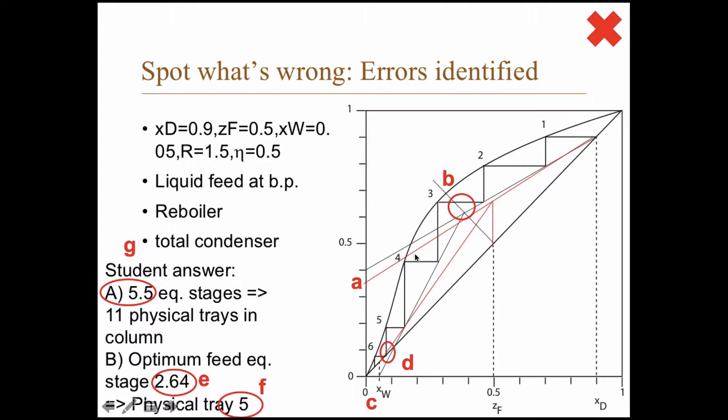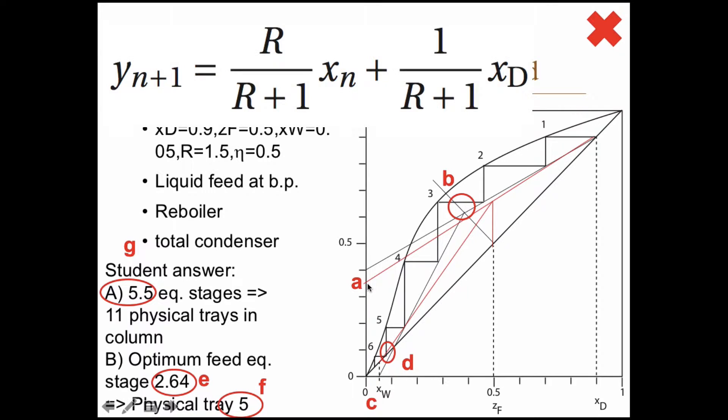The first thing is that this line here is wrong. The upper operating line is wrong. What the student has done here is to forget to multiply with xt. If you have x equals 0, then the y value for the upper operating line is xt divided by R plus 1, and you get 0.4 if you forget xt and just put 1 there instead.